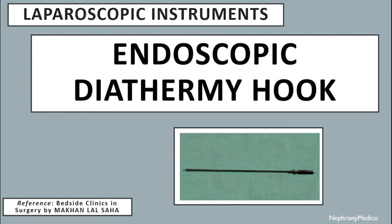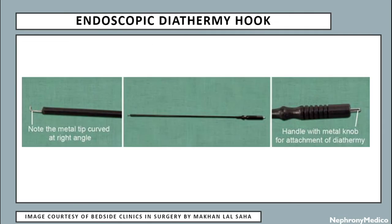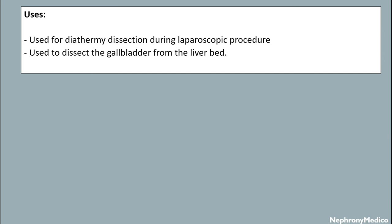Let's talk about the endoscopic diathermy hook, which is a laparoscopic instrument. This is a picture showing the endoscopic diathermy hook. Uses: it is used for diathermy dissection during laparoscopic procedures and is also used to dissect the gallbladder from the liver bed.